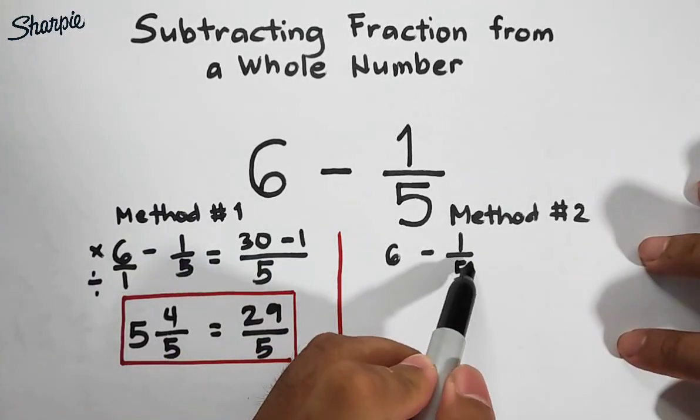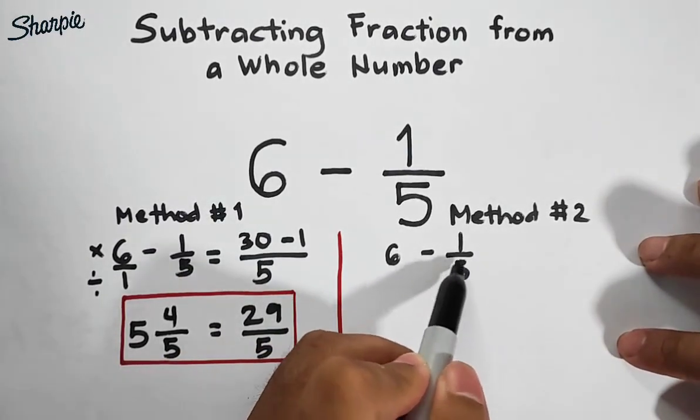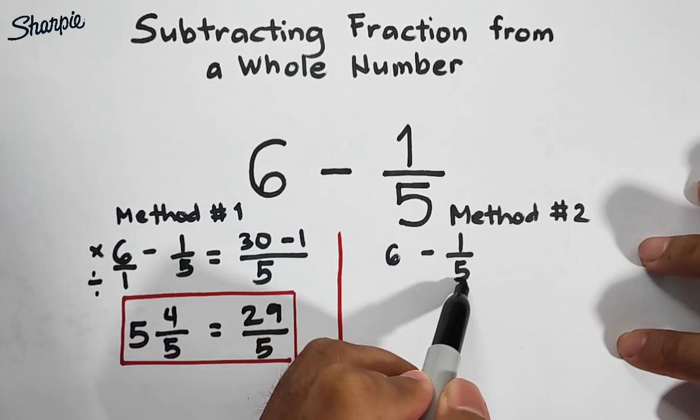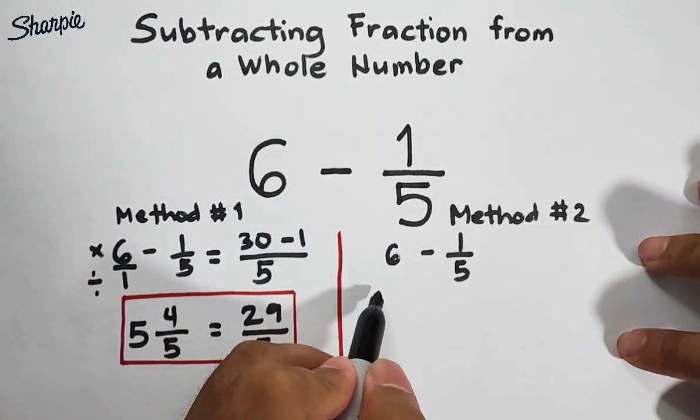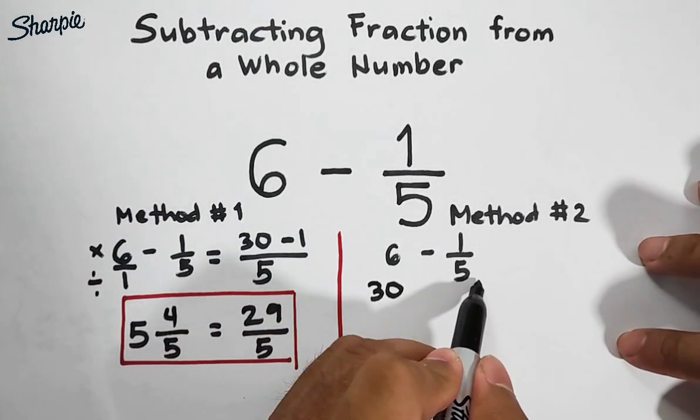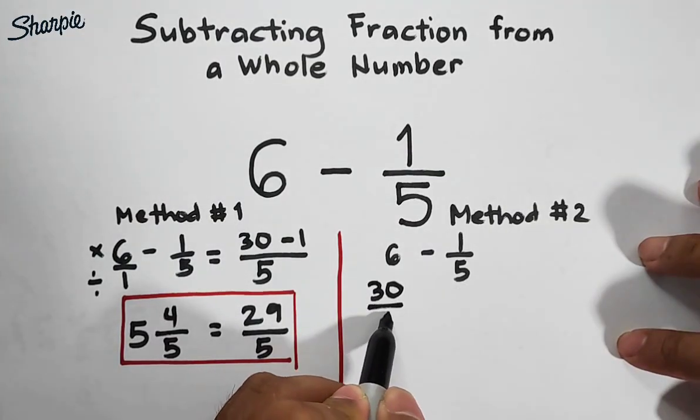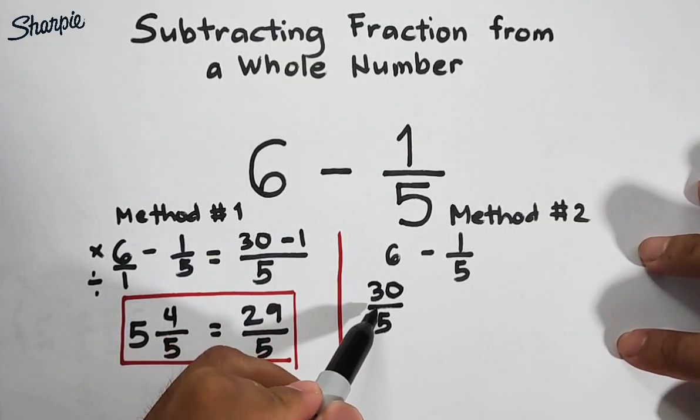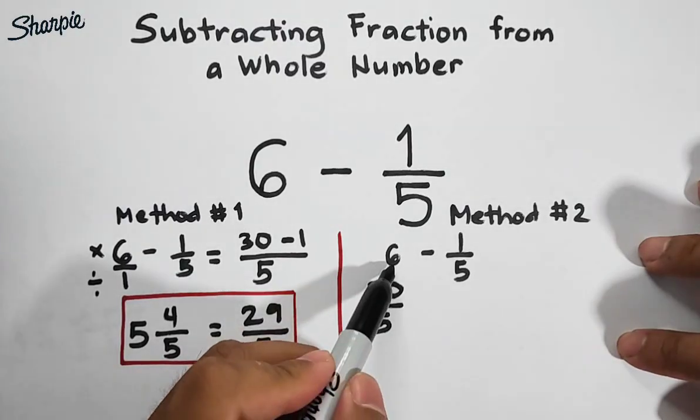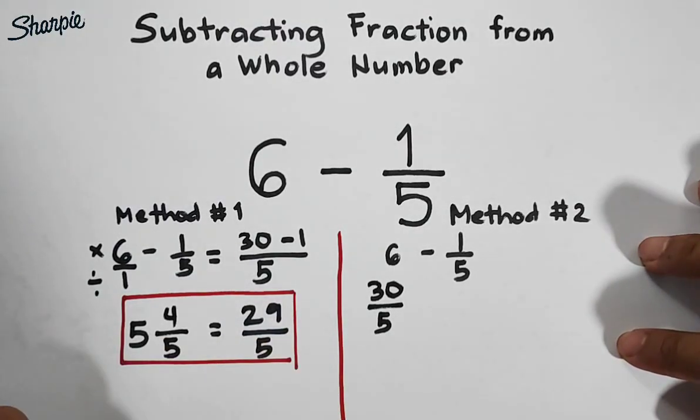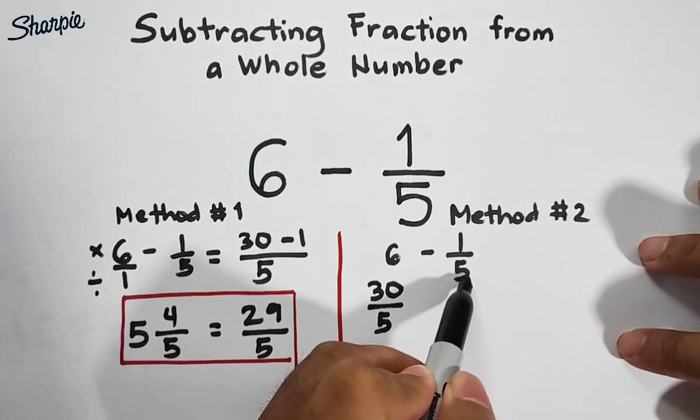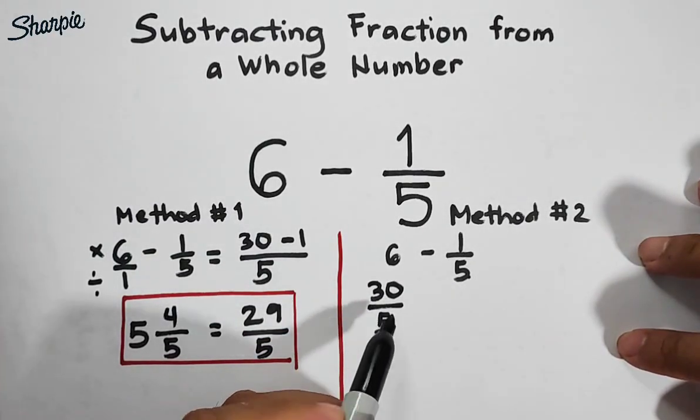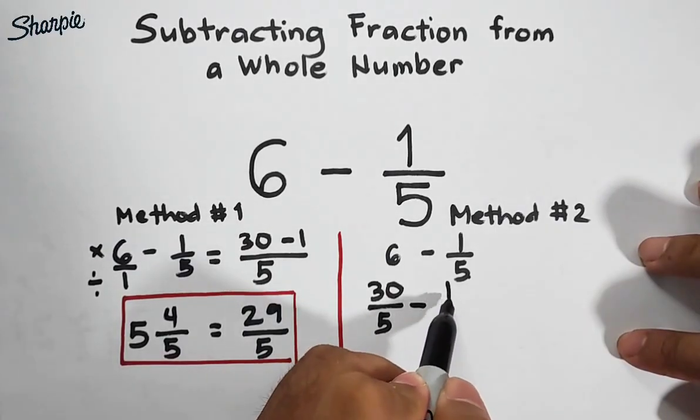As you can see, the denominator here is 5. To express 6 as a fraction, I will multiply 6 by 5 and that is 30, then copy the denominator, which is 5. When we simplify 30 over 5, that equals 6. Again, I multiply 6 by the denominator 5 to get 30, then copy the denominator.